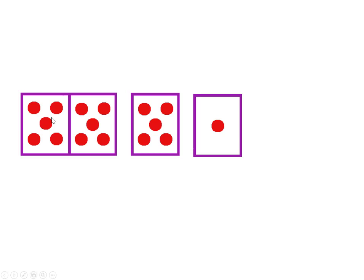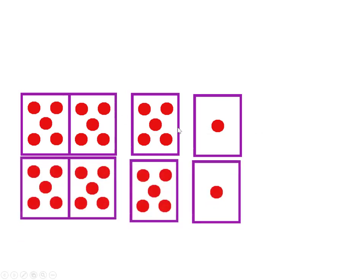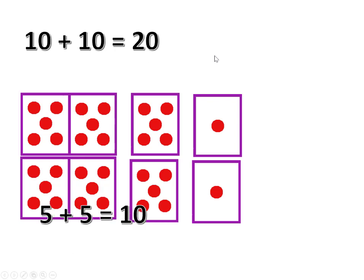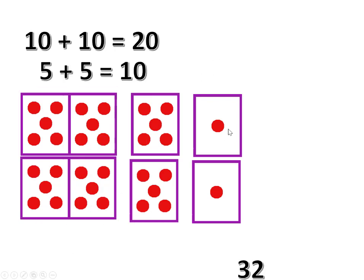Another way is start with knowing that double 8 is 16. And let's rearrange that 16 to look like this: 5, 10, 15, 16. 16 plus 16. Well, 10 plus 10 is 20. 5 plus 5 is 10. 1 and 1 is 2. So 15 and 15 are 30. Plus 2 is 32.